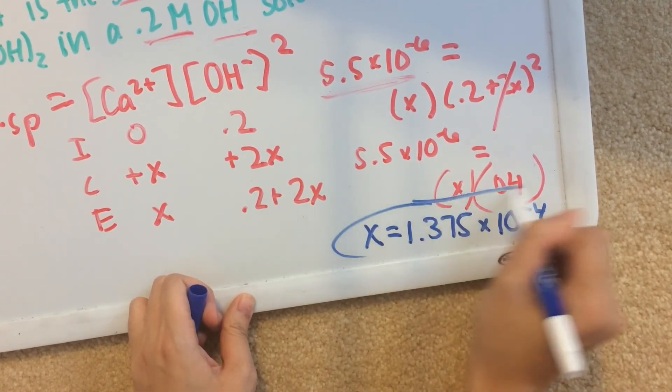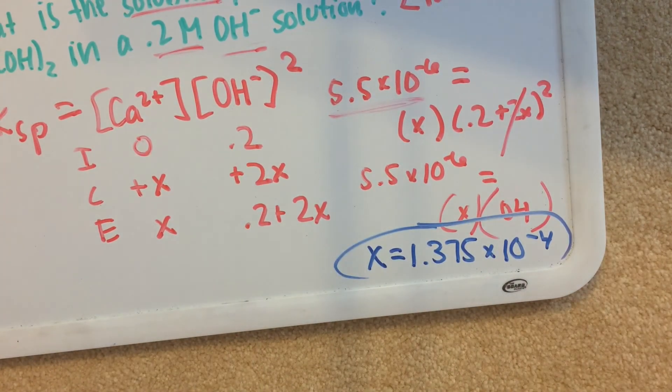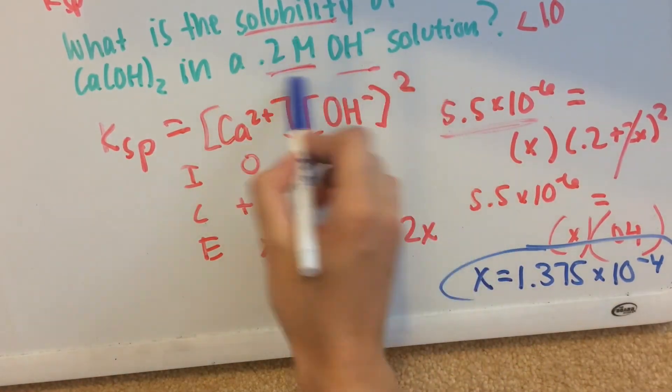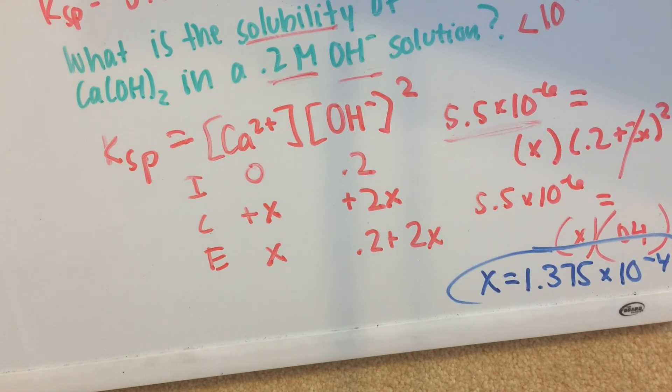That's a really small value. So as you can see, our solubility is really small because we already had OH⁻ in the solution.